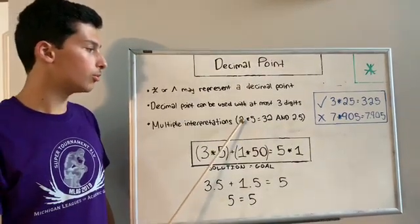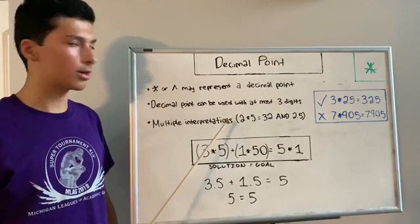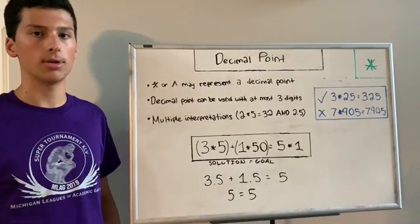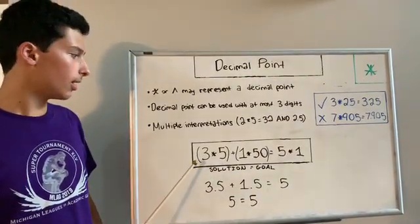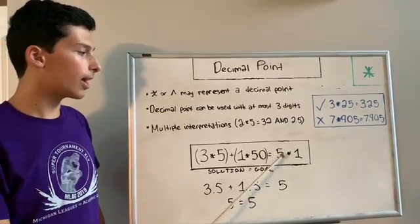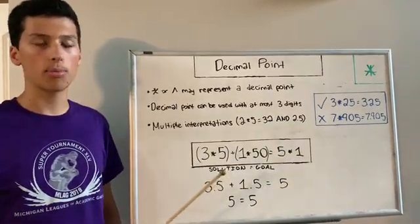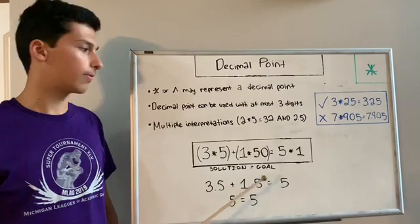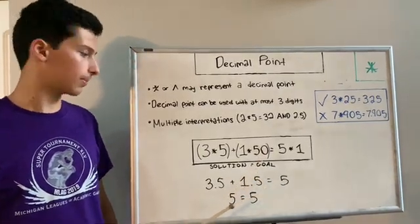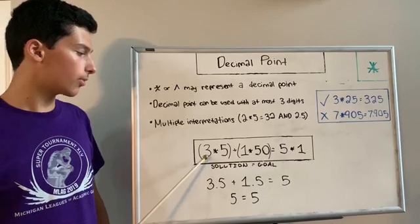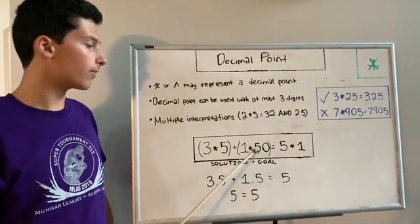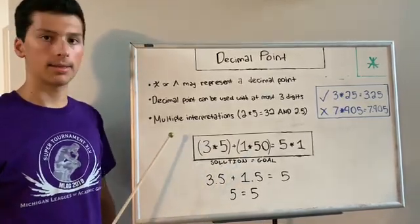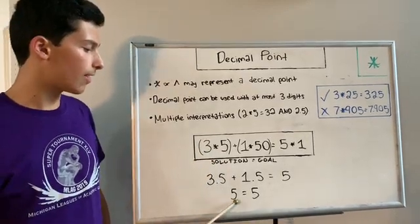There are also multiple interpretations. So if we had 2 to the power of 5, that can either be interpreted as a decimal point, which is 2.5, or it can be interpreted normally as 2 to the power of 5, which is 32. So the choice is up to you. If we look at this example here, the goal is 5 to the power of 1. You can interpret that as 5.1 or 5 to the power of 1. In this case, the person interpreted it as 5 to the power of 1 normally, which is 5. So, 3.5 plus 1.5 is 5. The player chose to interpret these power signs as a decimal point, so 5 would equal 5.